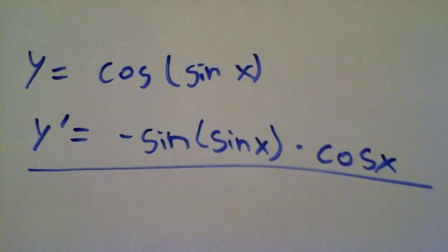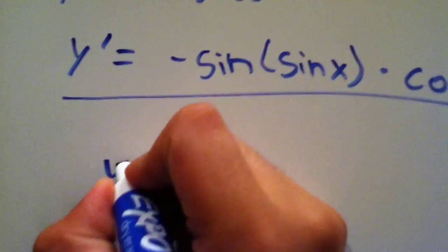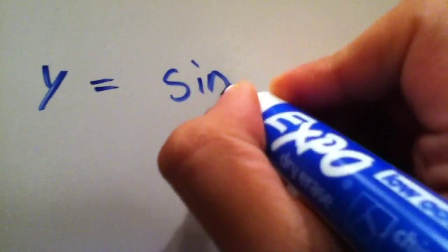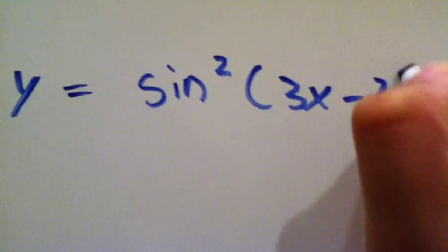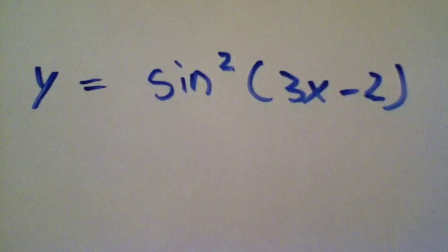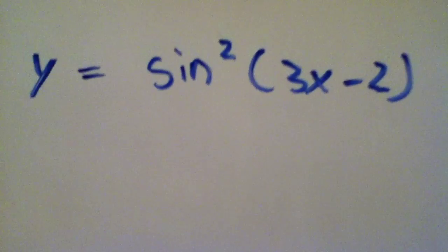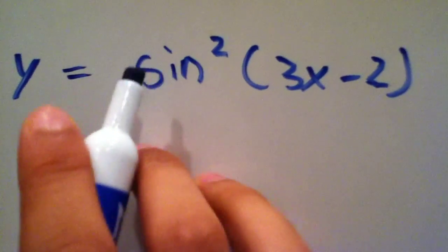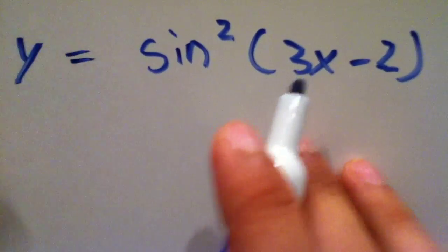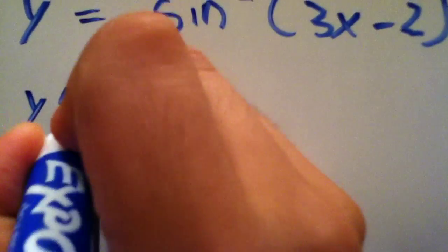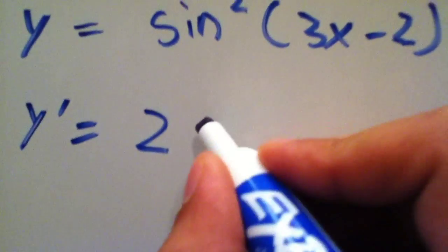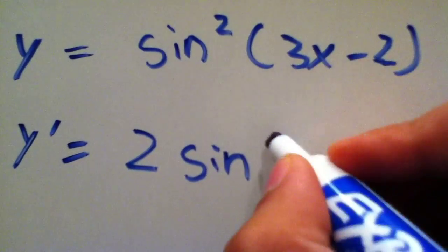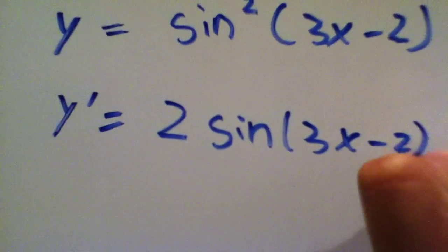The next example is y equal to sine squared of 3x minus 2. This is a little more complicated because there's more than one inside and outside function. Starting with the outermost function — think of it as x squared — when you do y prime, it's going to equal 2 sine, evaluated at the inside, 3x minus 2. That's the first part.